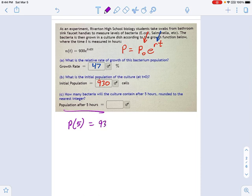equals your initial population, 930, times E to the R, and remember R is that 0.47 T. And here's the important part, T is that 5 hours, okay? That's what P of 5 means.